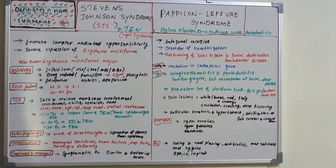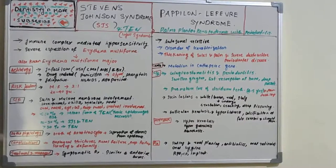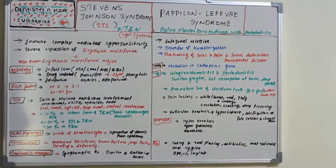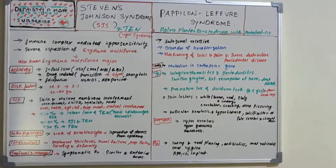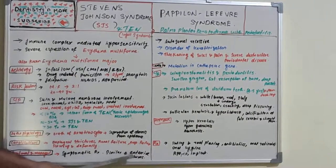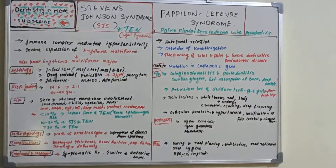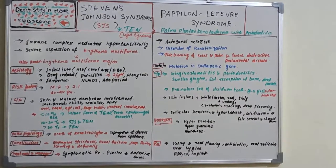Regarding investigations, no laboratory studies other than biopsy can definitively aid diagnosis. Skin biopsy is the definitive diagnostic method, revealing sub-epidermal bullae and epidermal cell necrosis. Treatment is mainly symptomatic, managed much like an extensive burn case. Stevens-Johnson syndrome is an immune complex-mediated condition involving skin and mucous membranes of various organs, with etiology from infections, drugs, or idiopathic causes.